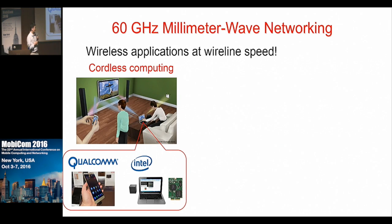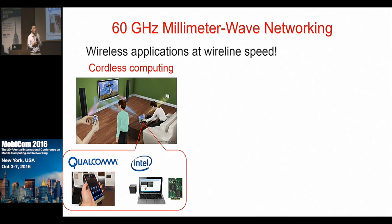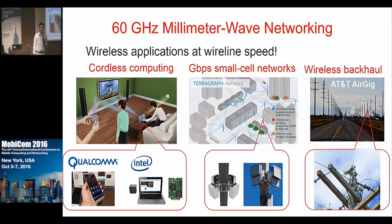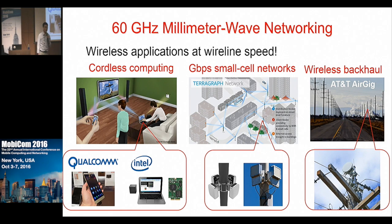Right now, commercial products that use 60 gigahertz spectrum already exist, and they can create so-called cordless computing applications, which replace the Ethernet cable and monitor cable using a multi-gigabps 60 gigahertz link. Industry giants such as Google, Facebook, and AT&T all released projects that use 60 gigahertz spectrum to realize multiple gigabps small cell networks, wireless spectrum hall, or wireless mesh networks.